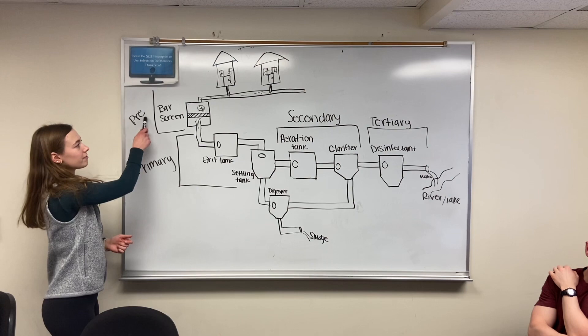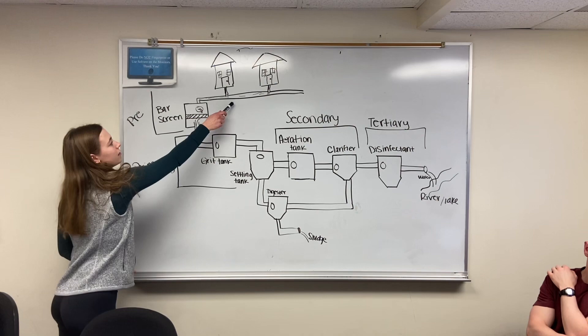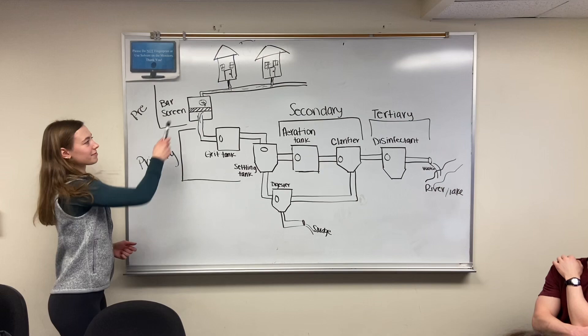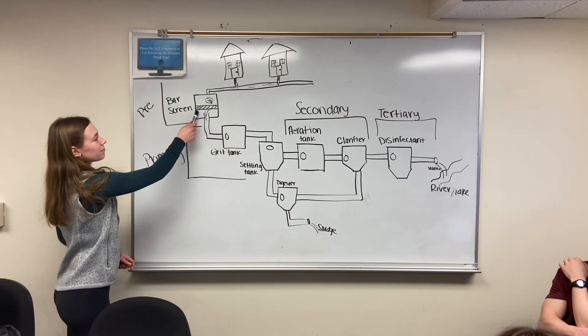Pre-treatment is the first stage of the wastewater treatment process. During this process, large debris type objects are removed from the water using screens and gates to collect the objects. Sand and gravel particles are sent through a grit chamber to filter out.